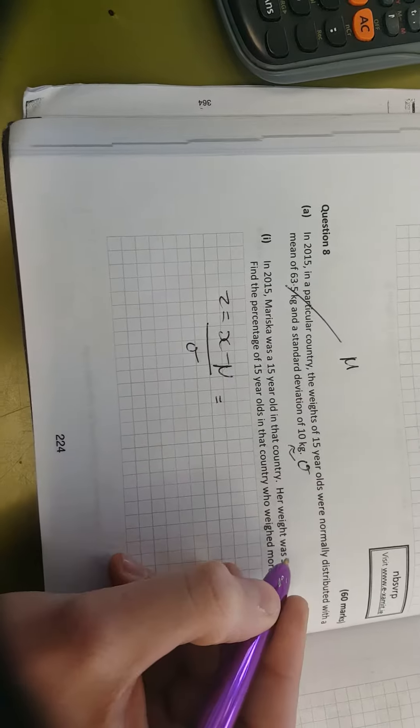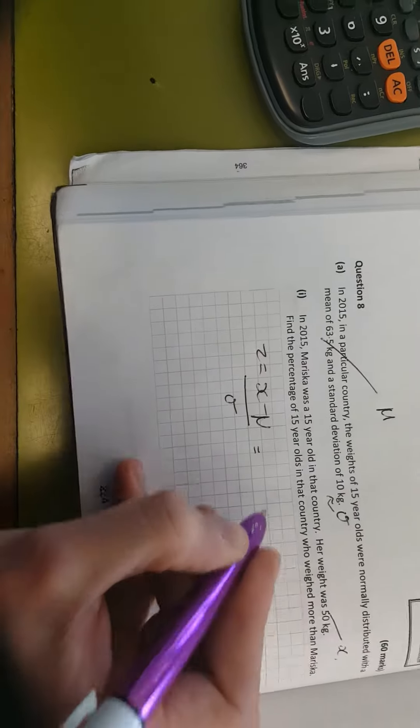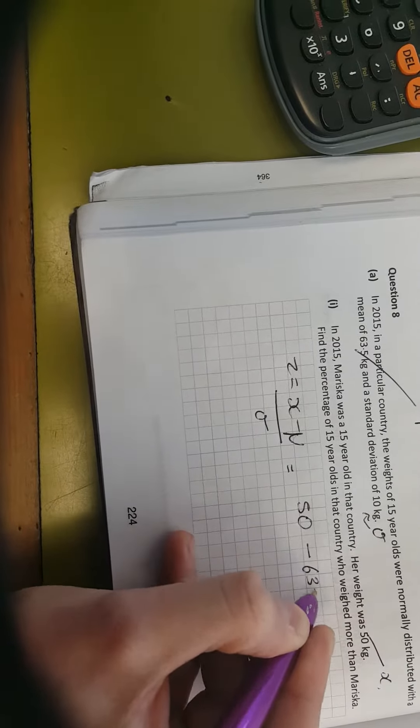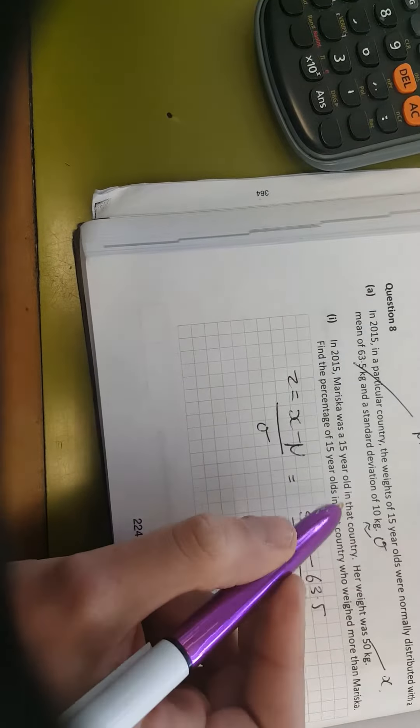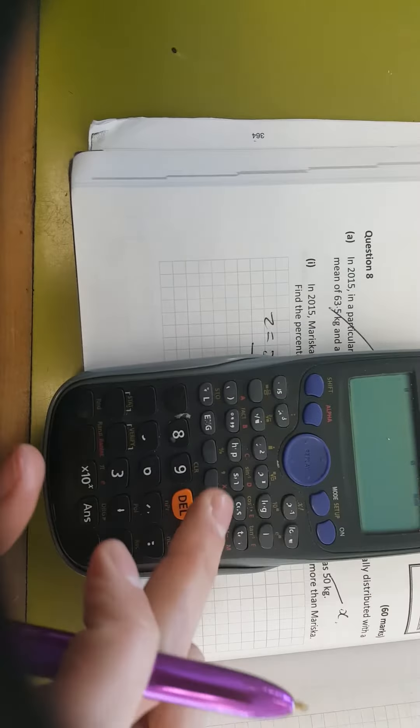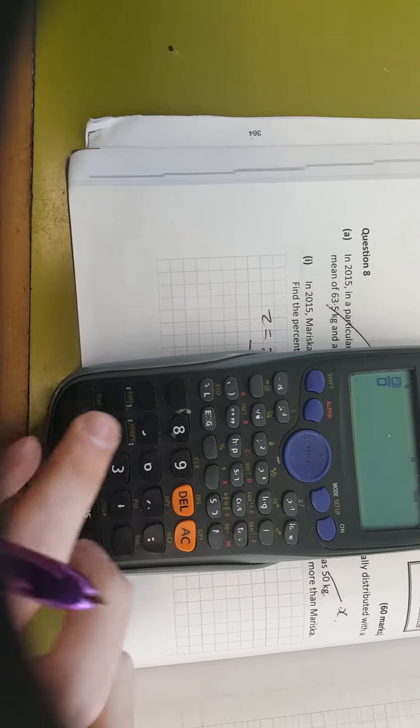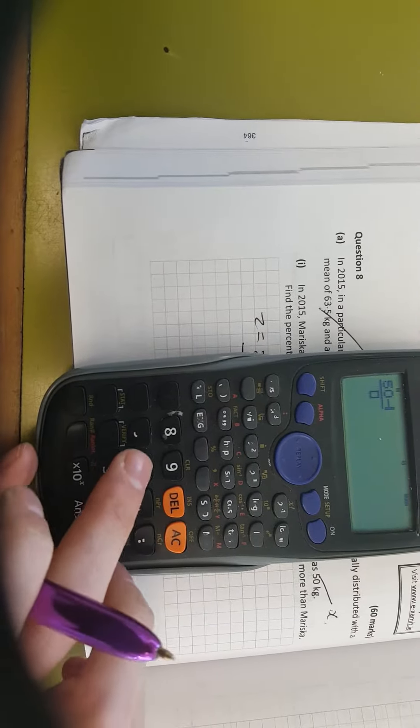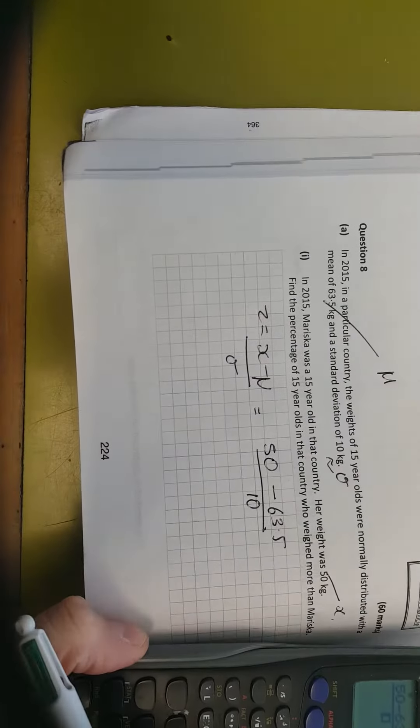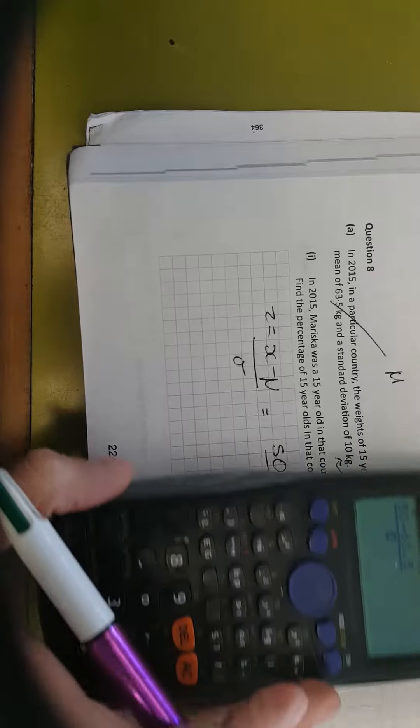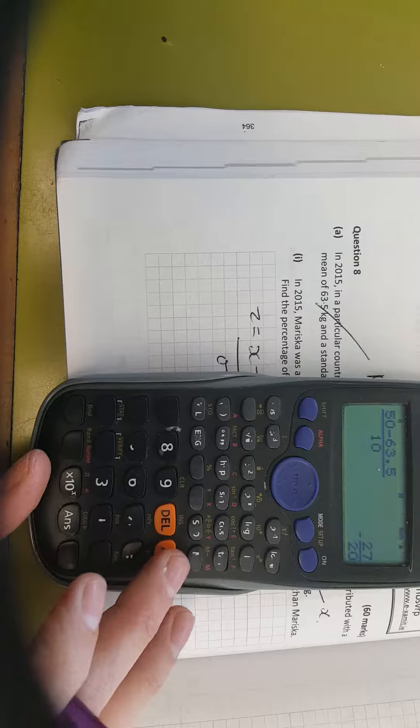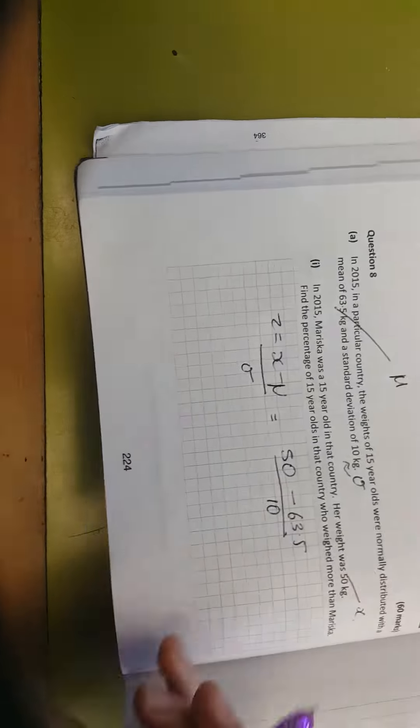And your x-value here is your 50 kgs. So 50 minus 63.5 over your standard deviation, which is 10 kgs. So let's put that in your calculator. Over 10. Which is minus 1.35.